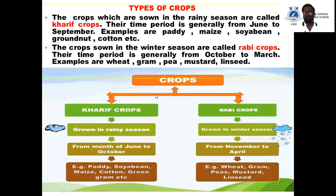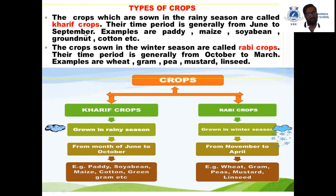According to seasons, there are two types of crops: Kharif crops and Rabi crops. The crops which are sown in the rainy season are called Kharif crops. The time period is generally from June to September, and the examples are paddy, maize, soya bean, groundnut, and cotton.